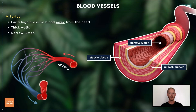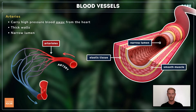Arteries carry high pressure blood away from the heart to the organs and tissues. They have thick muscular walls and a relatively narrow lumen. Arteries lead to smaller vessels called arterioles, and arterioles split off into capillaries.